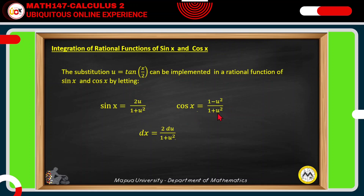The last equation can be derived by taking the differential of u equals tangent of x over 2 and then solving for dx, so we get dx equals 2 du over 1 plus u squared.